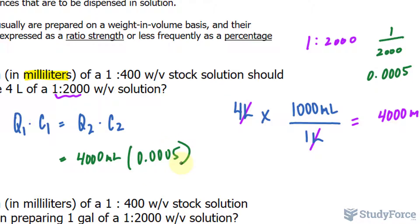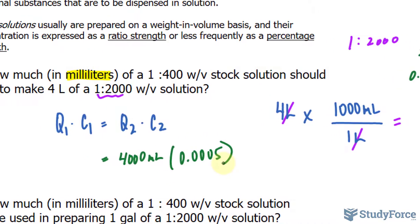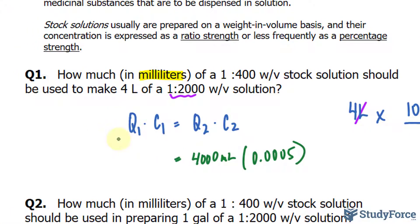On the left side of the equation, we don't know Q1. In fact, that's what we're looking for. We are looking for the amount, how much stock solution we need. So I'll leave Q1 the way it is.